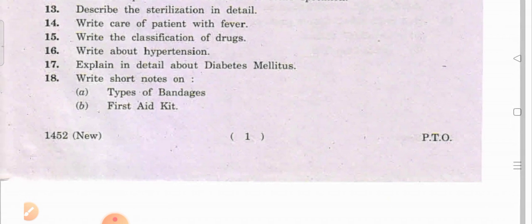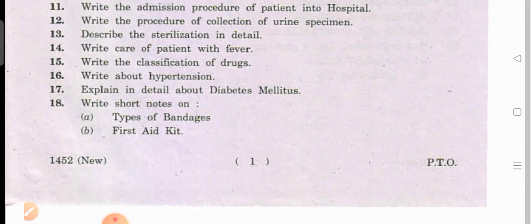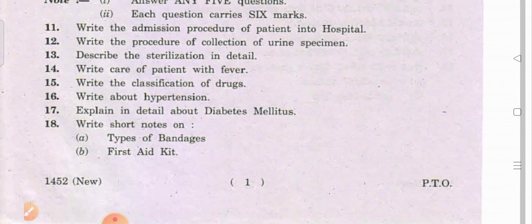Question five: Write the classification of drugs. Drugs are mainly classified depending upon the action of the drug in our body. Examples include: antipyretic, analgesics, anthelmintic, antiparasitic, antibiotic, antiviral, and antifungal. These are the classifications of drugs.